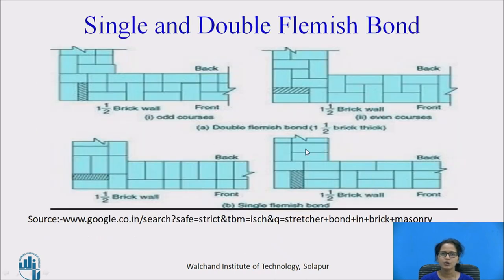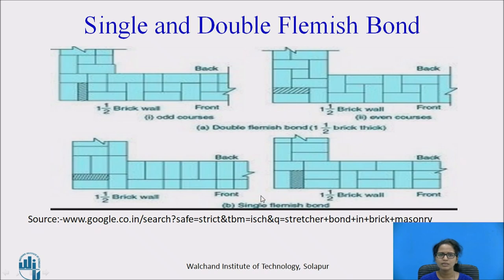Next we have the single and double Flemish bond. In the single Flemish bond, a stretcher is placed and then a header in the same course — it consists of a stretcher and a header alternating in each course. This type is used for a minimum one-and-a-half-brick-thick wall. The plan for odd courses and even courses represents the same appearance, giving the wall an aesthetic and pleasing look. It is a combination of the English bond and the Flemish bond.